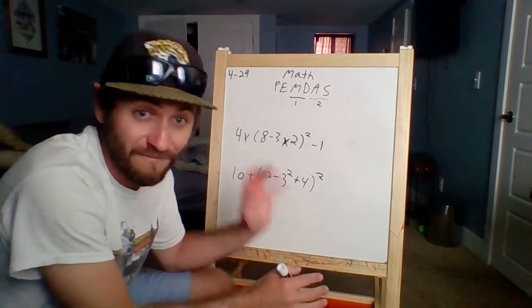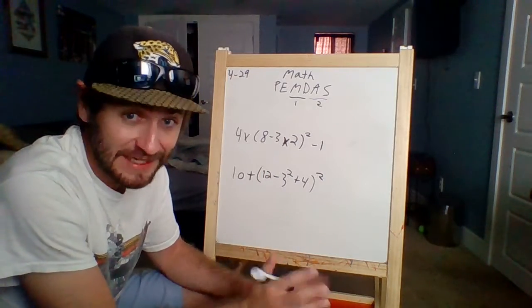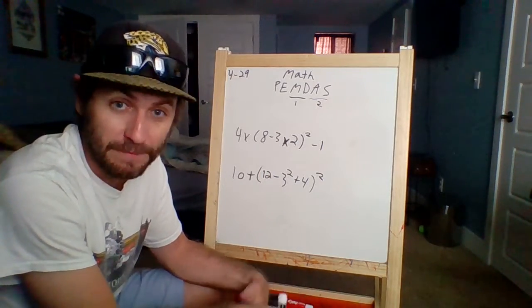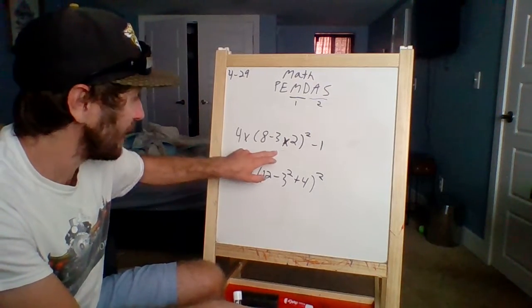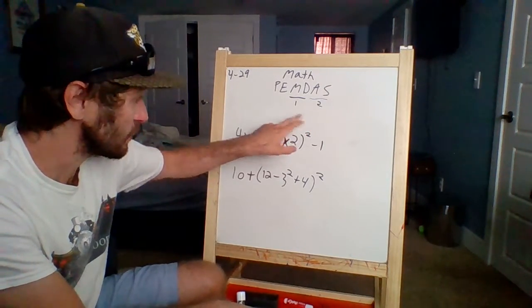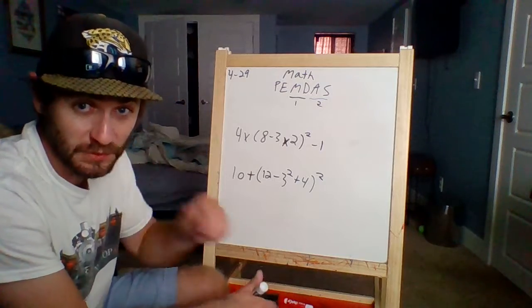All right. Two full problems here. Complex, scary to look at, but you can do it. Four times, parentheses, eight minus three times two. Square everything in the parentheses, minus one. First thing I got to do, parentheses.